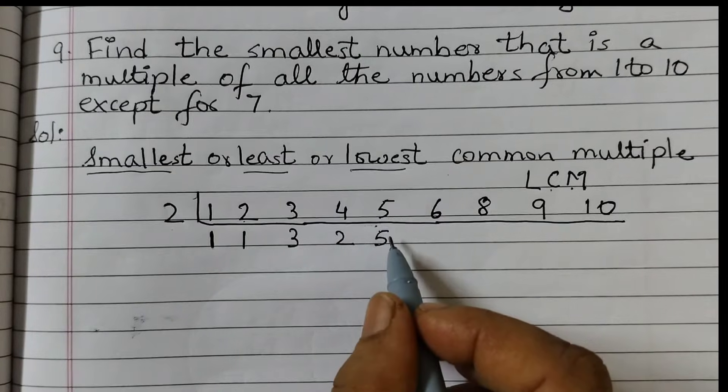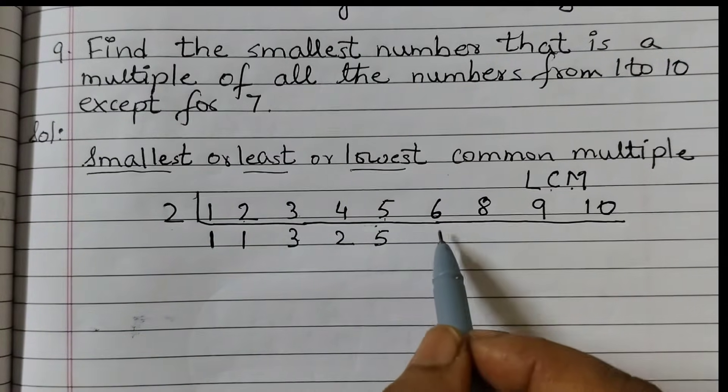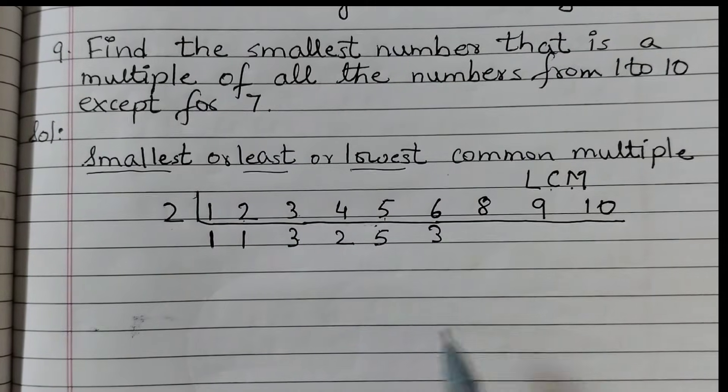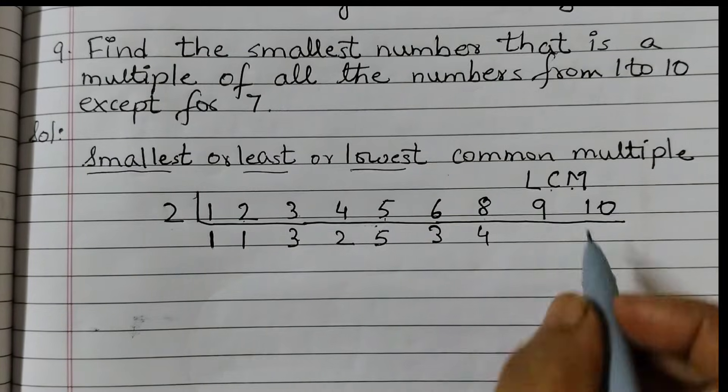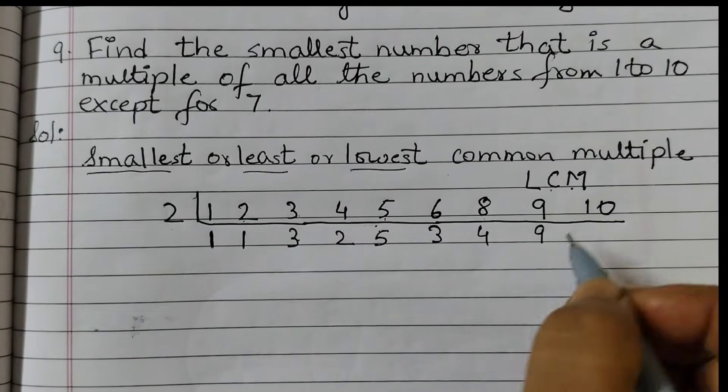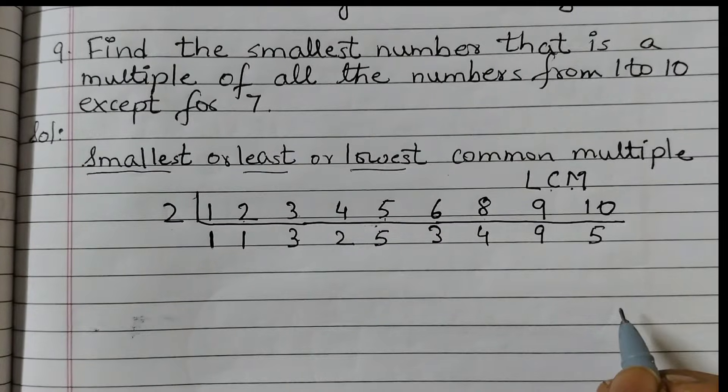Like here: 1 comes down, 3, 5. 6 is a multiple of 2 so 2 threes are 6. 8: 2 fours are 8. 9 is not a multiple so it will come down as it is. 2 fives are 10. Same way we need to go on doing this until we get all ones.